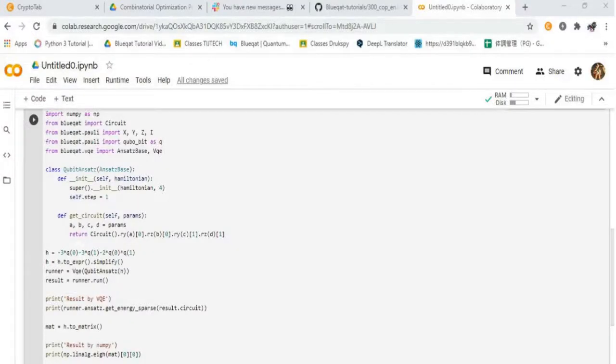Type the codes, firstly import the libraries. Then, defining a class for qubit ansets. Next, the first method is used for initializing the Hamiltonian. Next, method is used for getting the circuit using the parameters. Then next, defining the QUBO and compiling with VQE to get the desired result.